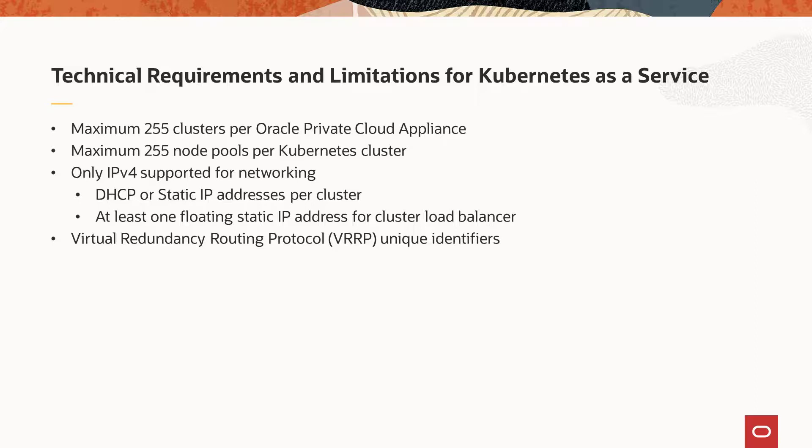In this implementation, Virtual Redundancy Routing Protocol, or VRRP, is required to support the load balancer floating IPv4 address. If other appliances or servers on the network are using VRRP, then you must use unique identifiers to prevent conflicts on the network. Always check with an administrator before assigning a VRRP identifier to a cluster.